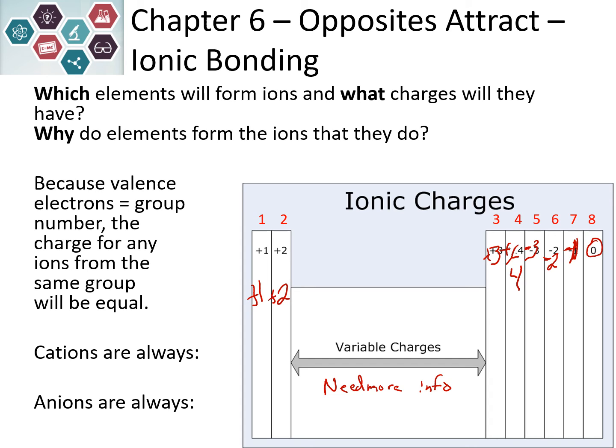Cations are always metals because they want to lose electrons to become more positively charged. Anions are always nonmetals because they want to gain electrons to become negatively charged.